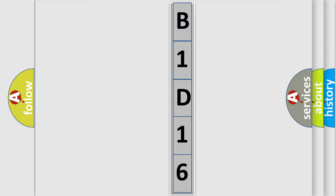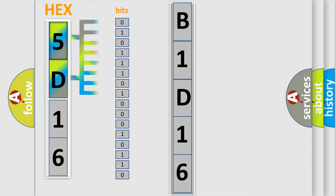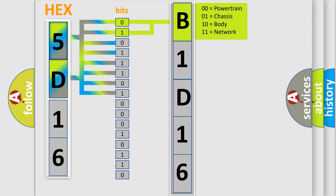The error code is split into two bytes consisting of 16 bits. One bit is the basic unit that each computer works with. The bit has two logical states: zero, the low level, and one, the high level. By combining the first two bits, the basic character of the error code is expressed.